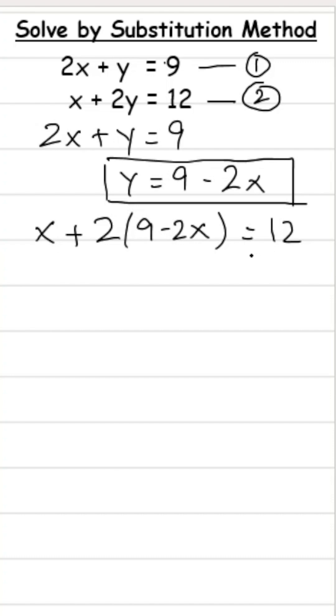Now this is a linear equation in the variable x. So it becomes x plus 2 times 9 is 18 minus 2 times 2x is 4x equals 12.